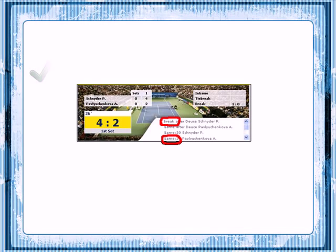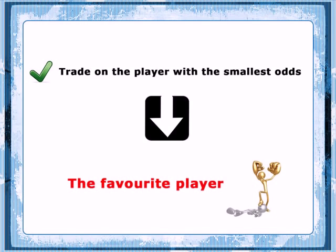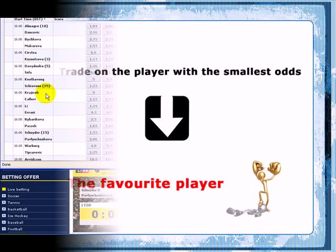You'll be much better off trading on the player with the smallest odds — respectively, the favourite player. The reason behind this is better liquidity on the favourite player's side and better odds distribution, which is very important when opening and closing the trade, and of course when exiting the trade with a loss in case the market goes against you.